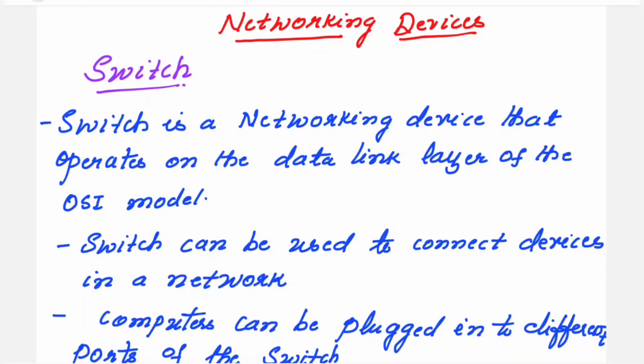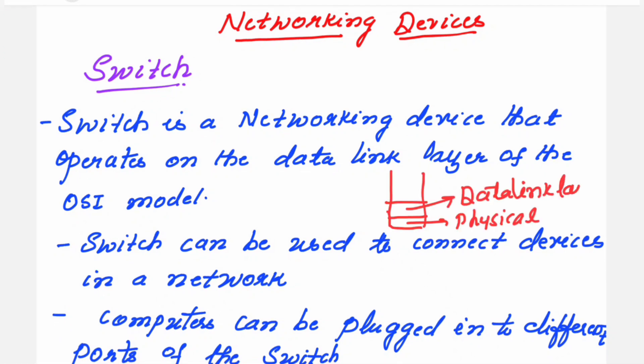Now what is a switch? It is a networking device that operates on the data link layer of the OSI model. We say switch is a layer 2 device. It operates on the data link layer of the OSI model and it is used to connect devices in a network.